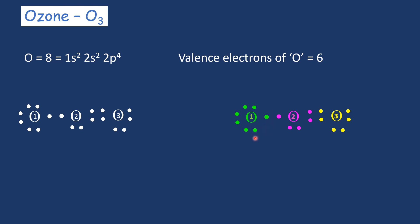Counting the electrons around oxygen 1, we have 2, 4, 6, 7 electrons — that is 7. Around oxygen 2, we have 5 electrons. Around oxygen 3, we have 6 electrons. Since the valence electron count for oxygen is 6: oxygen 1 carries a −1 formal charge, oxygen 2 carries a +1 formal charge, and oxygen 3 carries no formal charge. Written in bond representation, this is how ozone looks.